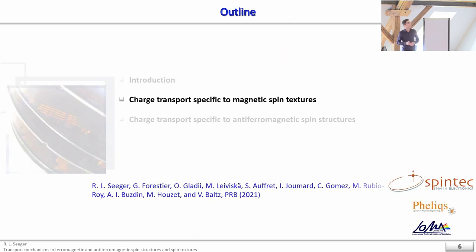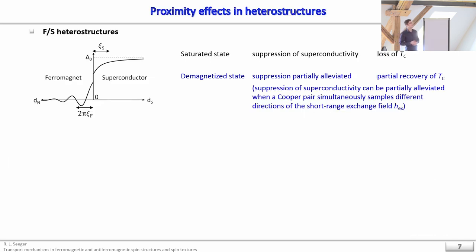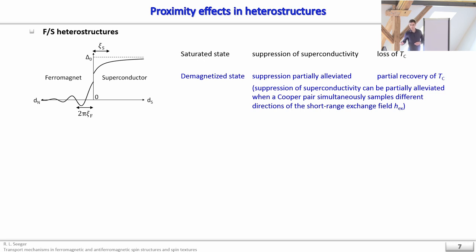In the first project I deal with charge transport near spin textures, using the proximity effect with superconductors to probe the penetration depth of Cooper pairs in an antiferromagnet. By way of introduction: in a superconductor you have Cooper pairs consisting of pairs of electrons with opposite spins. When you have an adjacent material, these Cooper pairs can diffuse into it. The key parameter is the coherence length of Cooper pairs, which characterizes the depth to which they can propagate in the neighboring material.